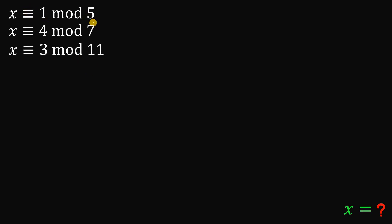So, x is congruent to 1 mod 5. This says that if this number x is divided by 5, you get a remainder of 1. Same thing — when this same number x is divided by 7, you get a remainder of 4. And if this same number is divided by 11, you get a remainder of 3. So, the 5, 7, and 11 are called moduli.